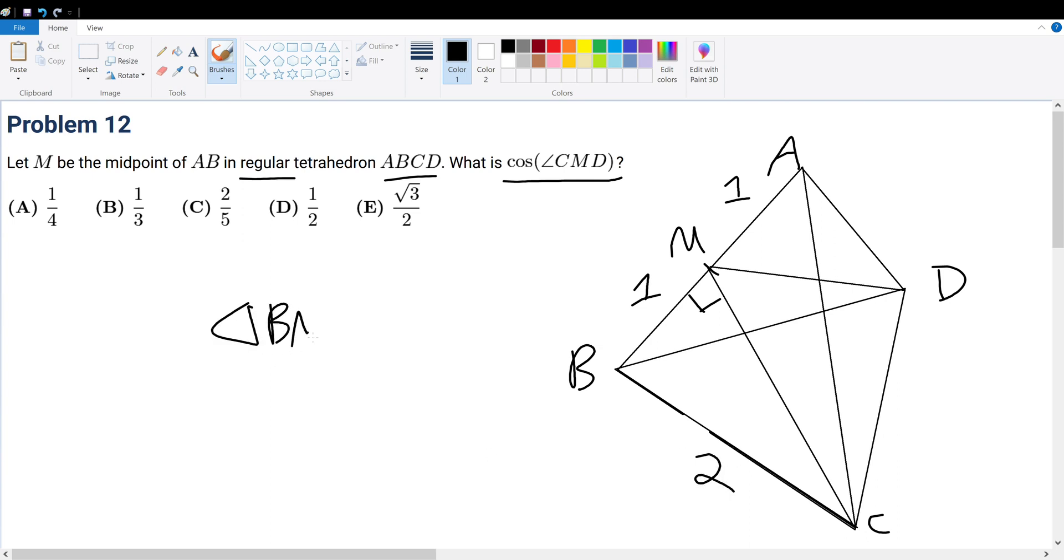Now triangle BMC is a right triangle at M. So therefore, what is the MC side length? The MC side length will just be the square root of 4 minus 1, which is root 3. So that means this would be root 3 and MD would be root 3. So we're trying to find this angle.